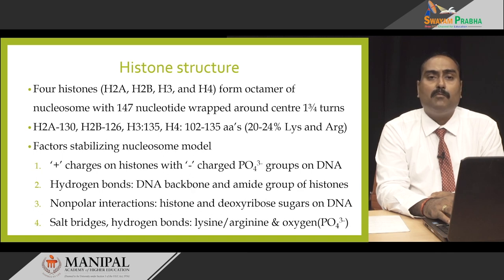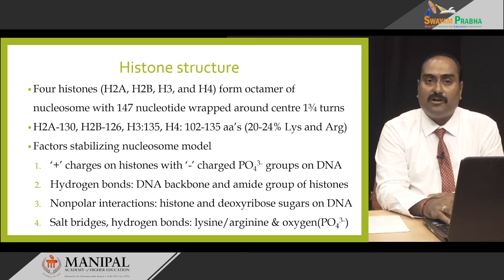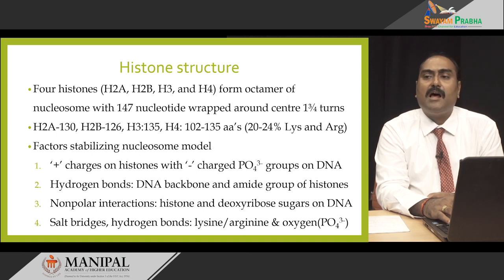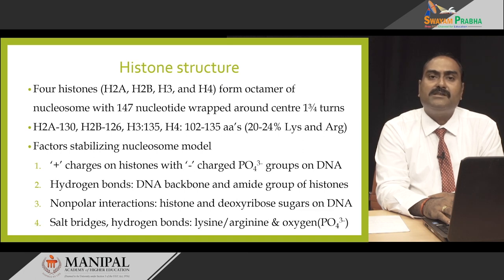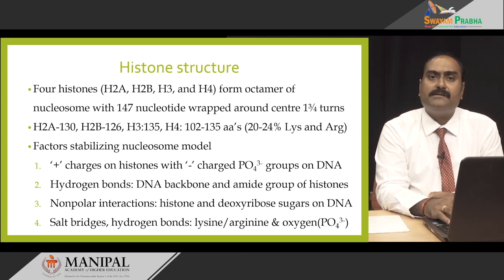The histones are made up of basic amino acids — arginine and lysine — which have a positive charge. This positive charge interacts with the negatively charged phosphate backbone of the DNA, and this charge helps to keep the DNA tightly wound around the histone octamer. In addition, there are hydrogen bonds between the DNA backbone and the amide groups of the histone amino acids, non-polar interactions between histones and the deoxyribosugars on the DNA, and salt bridges and hydrogen bond interactions between lysine and arginine with the oxygen on the phosphate group. The basic idea is that DNA is wrapped around the histone octamer through all four types of interactions, each playing an important role in maintaining the nucleosome structure.